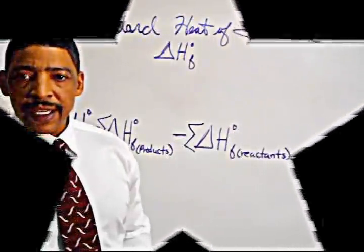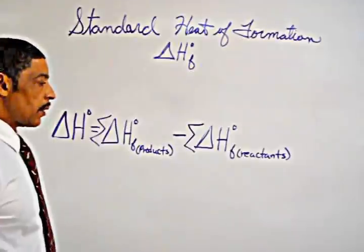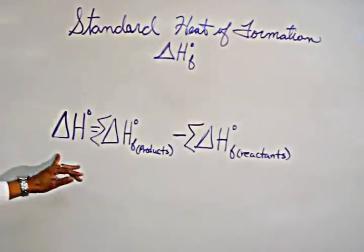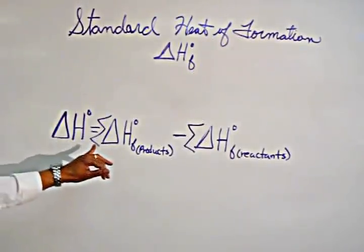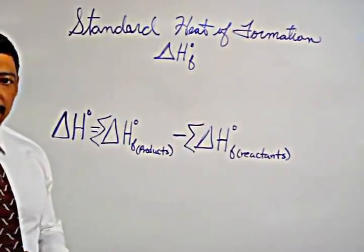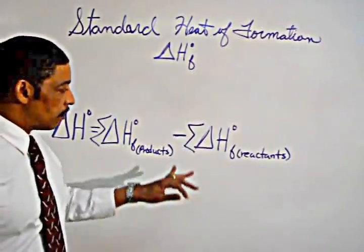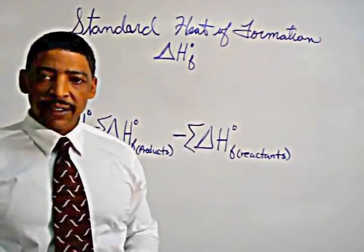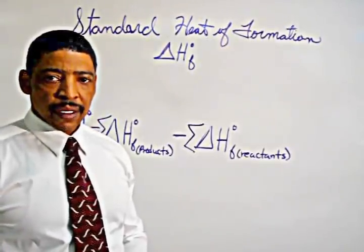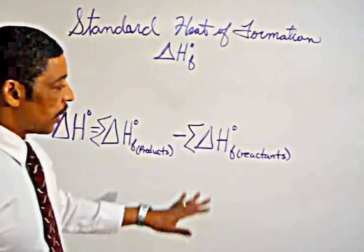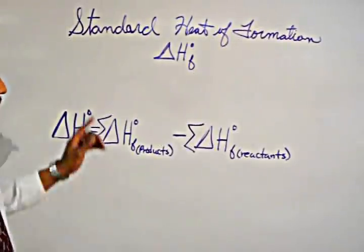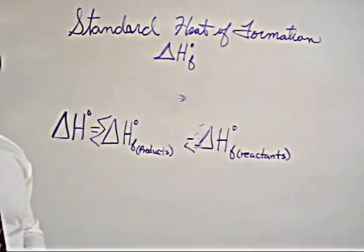Delta H, or heat of reaction, may be calculated by using this formula, where delta H is equal to the sum of the standard heats of formation of the products minus the sum of the standard heats of formation of the reactants. These values may be found on a table of standard heats of formation.